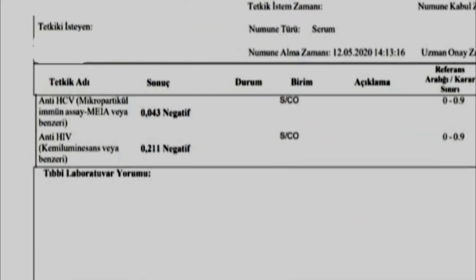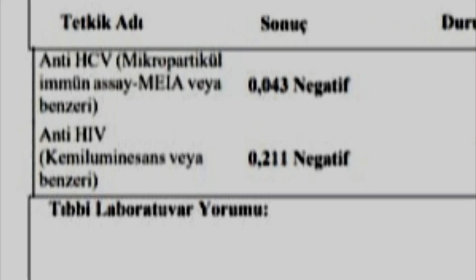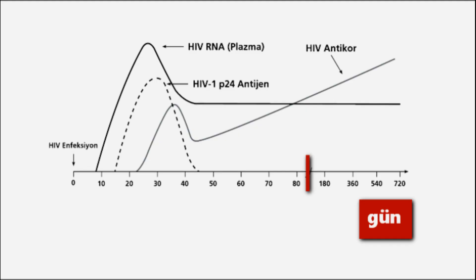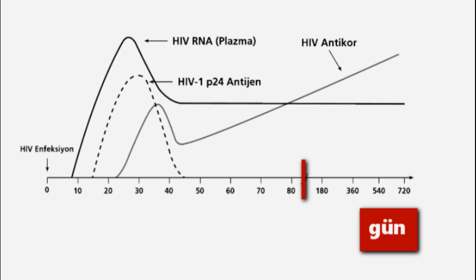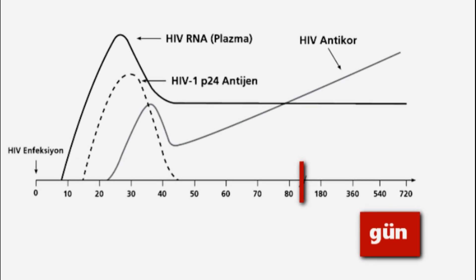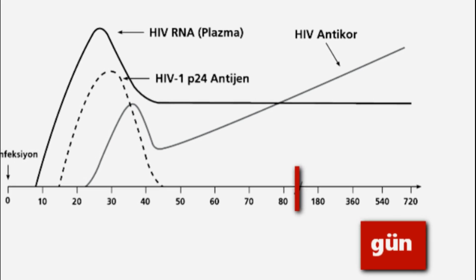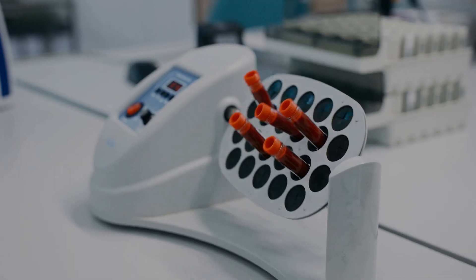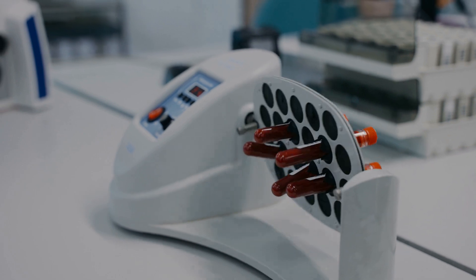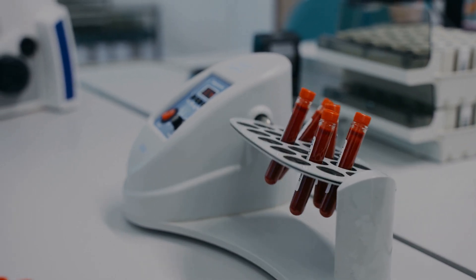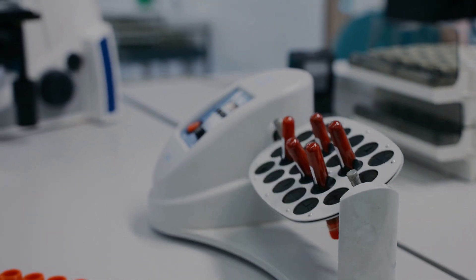A false negative result can happen if a person gets tested too soon after contracting HIV. Tests for HIV are only accurate after a certain amount of time has passed since the person has been exposed to the virus, and this window period varies from one type of test to another. False negative results most often occur when people test in the first few weeks after infection, during the window period, when the markers of infection — P24 antigen and antibodies — that tests look for may be absent or scarce. Tests cannot reliably pick up all cases of infection during the window period.